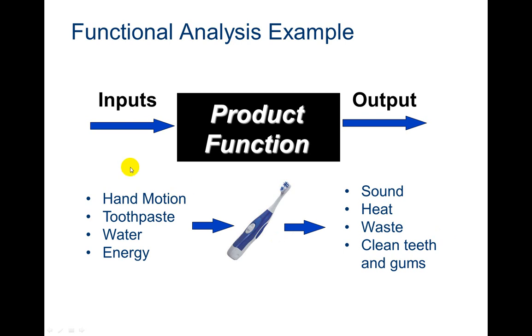The toothbrush does not work as well if you're missing one of these items. So then the product function is going to happen, these things are going to happen, and then the output, you're going to have sound, you're going to have heat because there was friction, you'll have waste, and then also a result, the output is you'll have clean teeth and gums. So this is inputs and outputs.